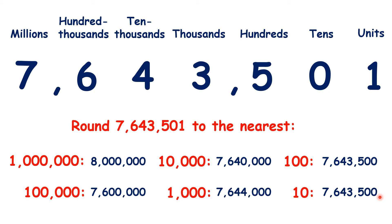Notice that rounding to different place values can give the same answer, and this can be confusing. But let's imagine we just had the number 501. Of course, that's 500 rounded to the nearest hundred, but it's also 500 to the nearest ten, because the multiples of ten either side of 501 are 500 and 510, and it's closer to 500.